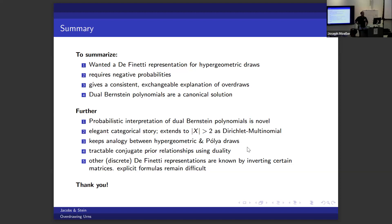Another related question: in continuous-time probability theory, negative things can often be interpreted as tangent vectors to the simplex. Could the signed measures here be interpreted similarly as formal differences in a discrete setting? The speaker says they don't know but finds the tangent space interpretation interesting.